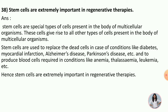Diabetes you know; myocardial infarction means heart attack; Alzheimer's disease means memory loss; and Parkinson's disease is a central nervous system related disorder that affects movement. In these diseases, cells are dead and can be replaced by stem cells. Stem cells are also used to produce blood cells required in conditions like anemia, thalassemia, and leukemia — these are blood-related diseases. Hence, stem cells are extremely important in regenerative therapies.